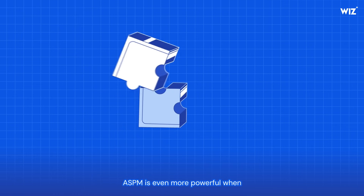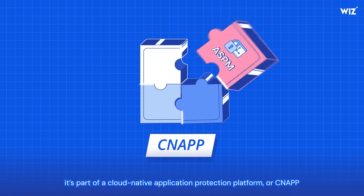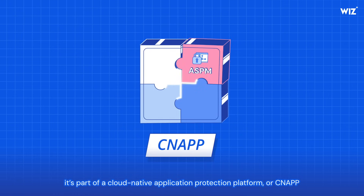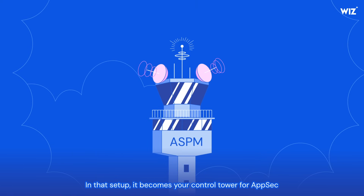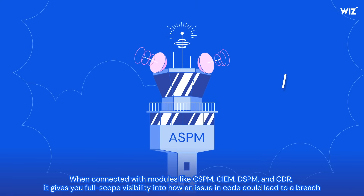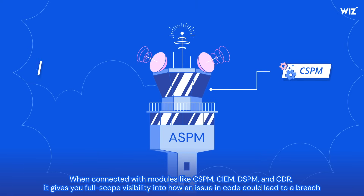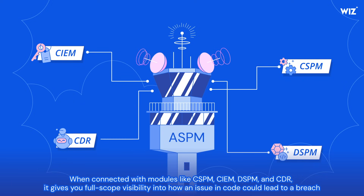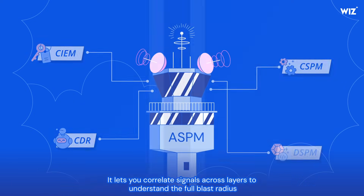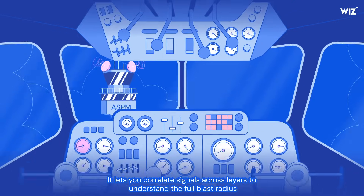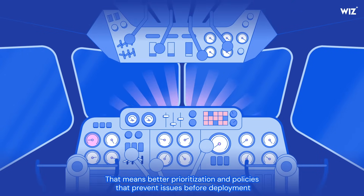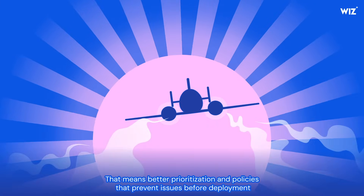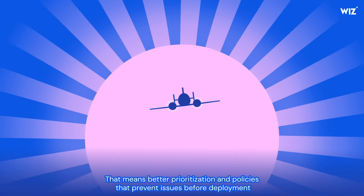ASPM is even more powerful when it's part of a cloud-native application protection platform, or a CNAPP. In that setup, it becomes your control tower for AppSec. When connected with modules like CSPM, CIEM, DSPM, and CDR, it gives you full-scope visibility into how an issue in code could lead to a breach. It lets you correlate signals across layers to understand the full blast radius. That means better prioritization and policies that prevent issues before deployment.